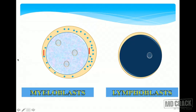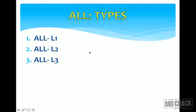Look for the amount of cytoplasmic granules and the nuclear structure — is it open chromatin or tightly packed chromatin? Look for the nucleoli. Most importantly, look for Auer rods, which confirm myeloblast.